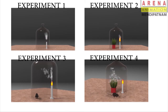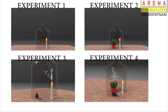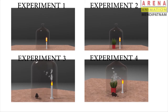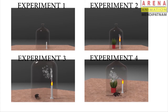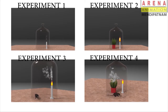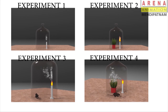By all the above experiments, we come to the conclusion that in Experiments 1 and 3, due to lack of oxygen, the burning candle went out and the rat died. But in Experiments 2 and 4, the mint plant released oxygen through the photosynthesis process, taking in the carbon dioxide released by the burning candle. So the candle kept burning without interruption and the rat lived happily.